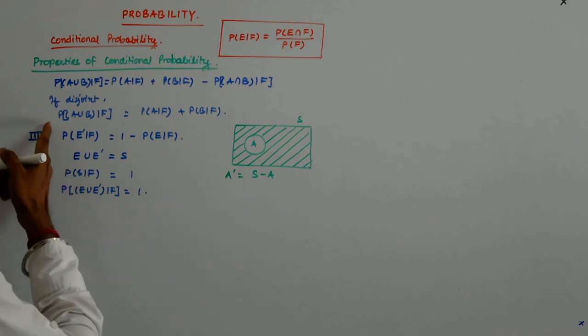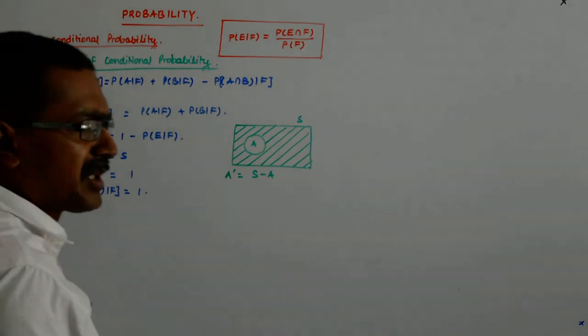What is this? E and E complement are disjoint.